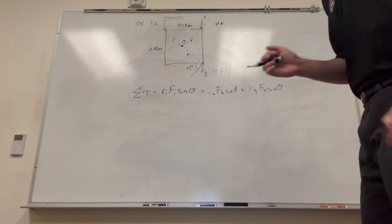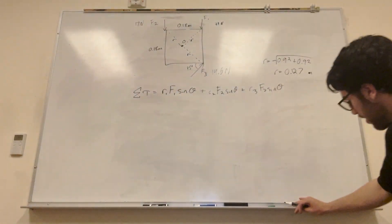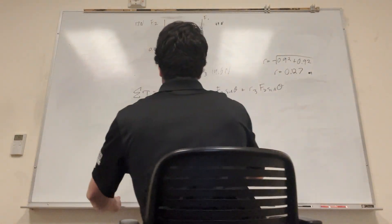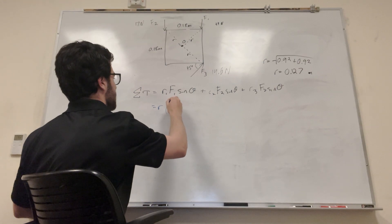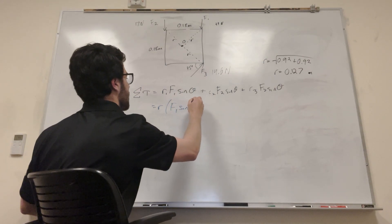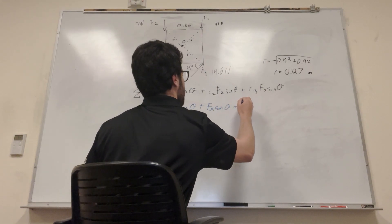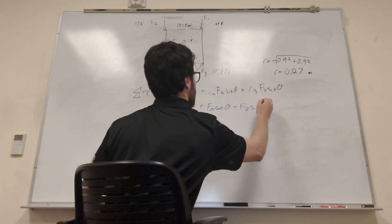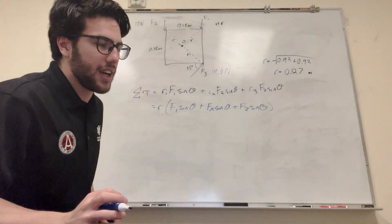Okay, so that's the radius and that's true for all of them. So what we can do is we can rewrite this. I'm going to sit down. So we can bring out the radius. So it's gonna be force one sine of theta plus force two sine of theta plus force three sine of theta. Yeah, okay.